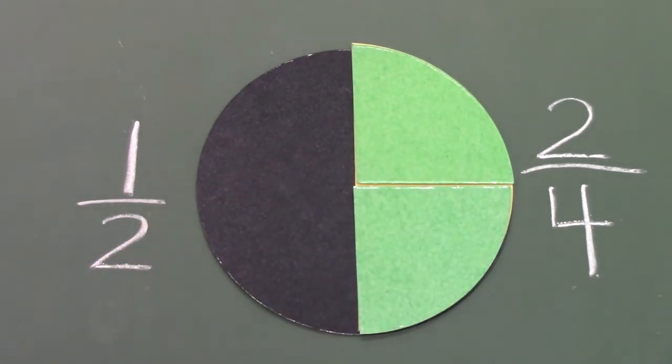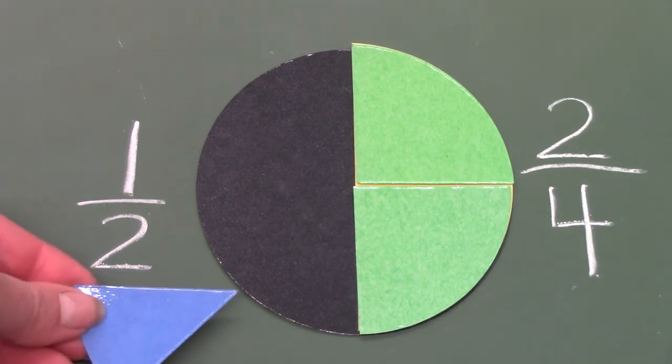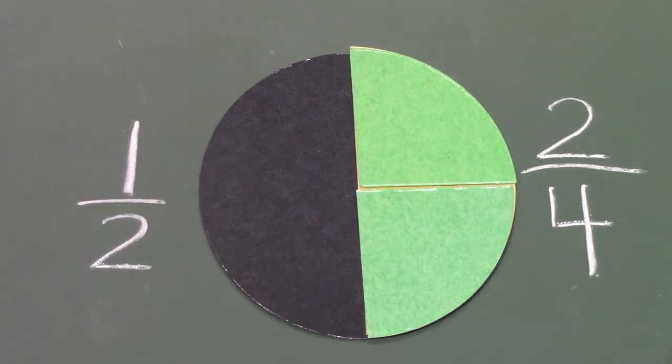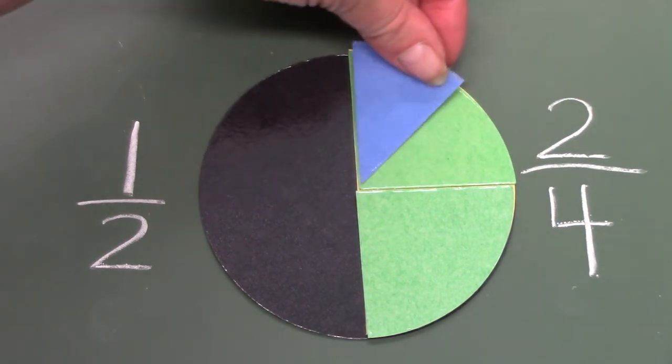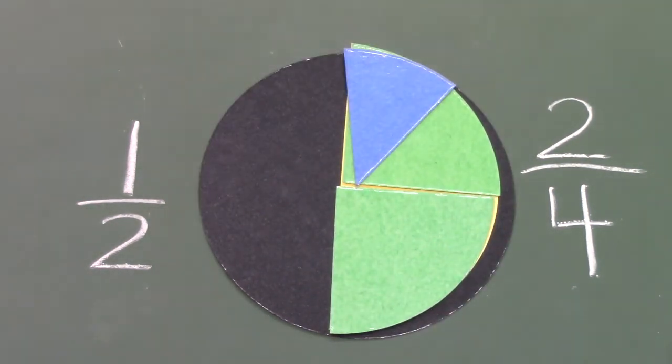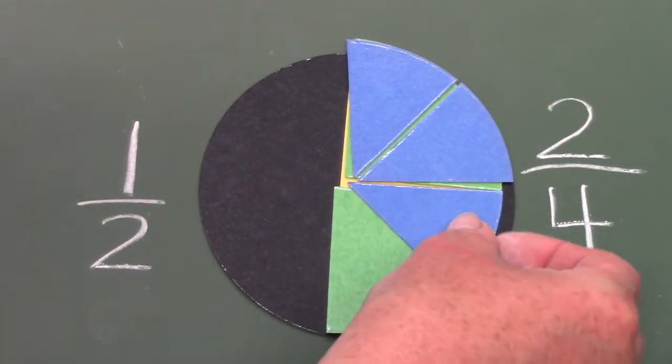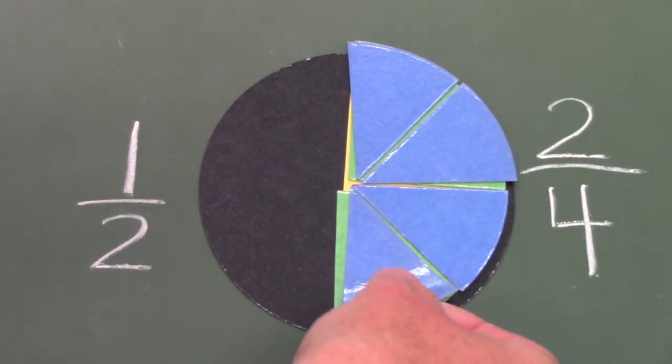I wonder how many of the one-eighth pieces would we need to fill one half of the circle. Can you guess? Let's see. One, two, three, four.